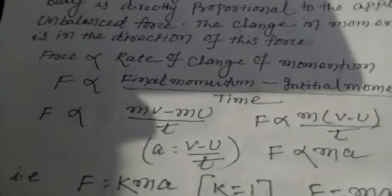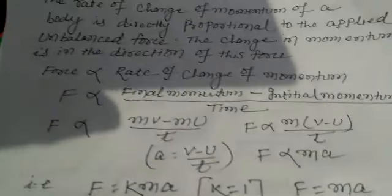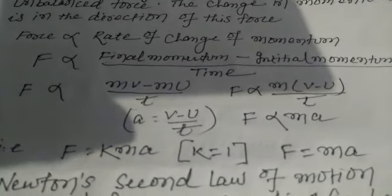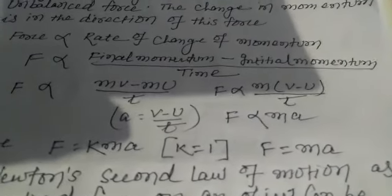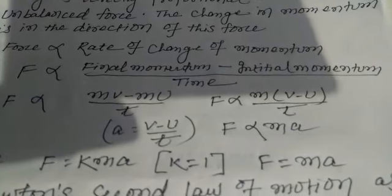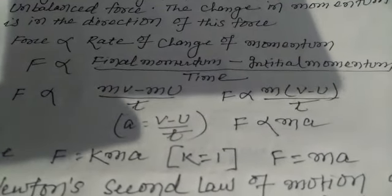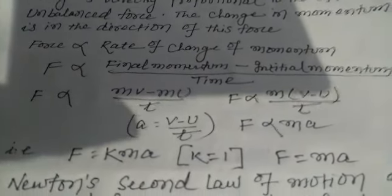Where V minus U divided by T is known as acceleration. Rate of change of velocity with respect to time is known as acceleration. So force is proportional to mass into acceleration. Therefore force is equal to a constant K multiplied by M into A, where K is the force constant, giving us F is equal to M into A.